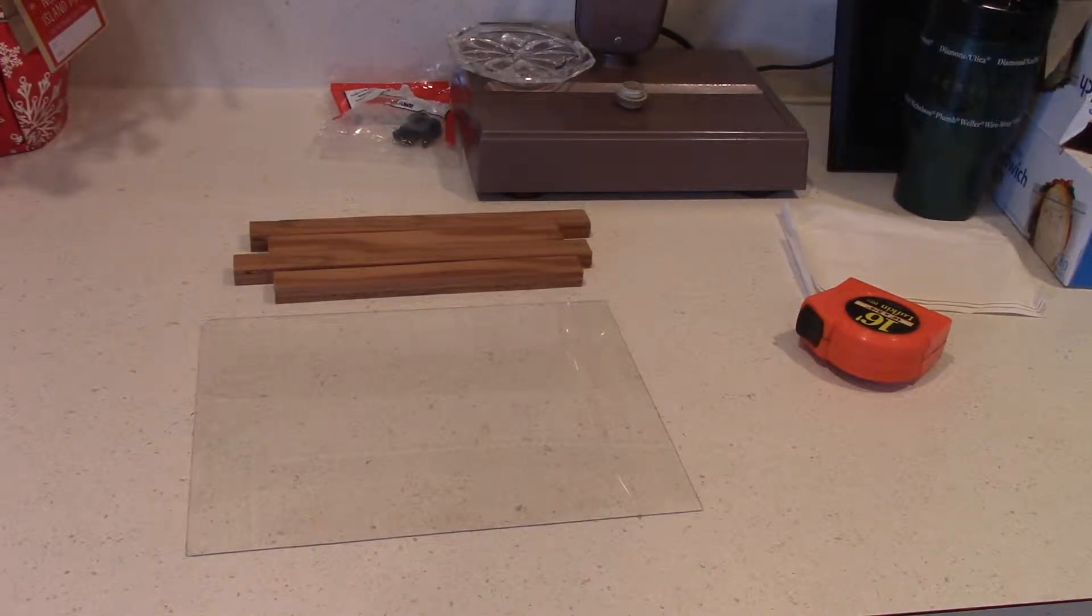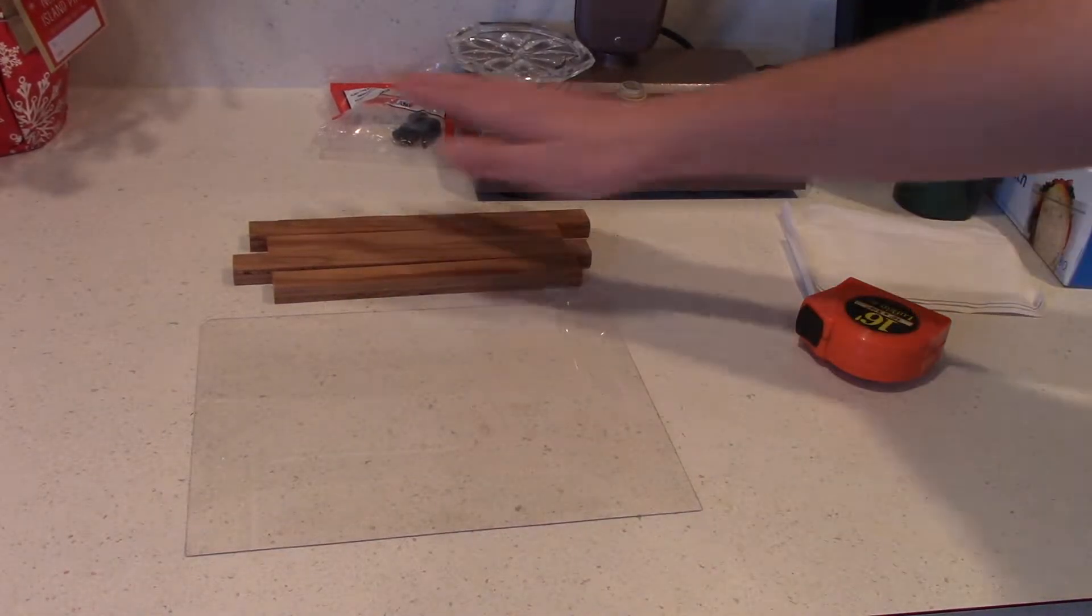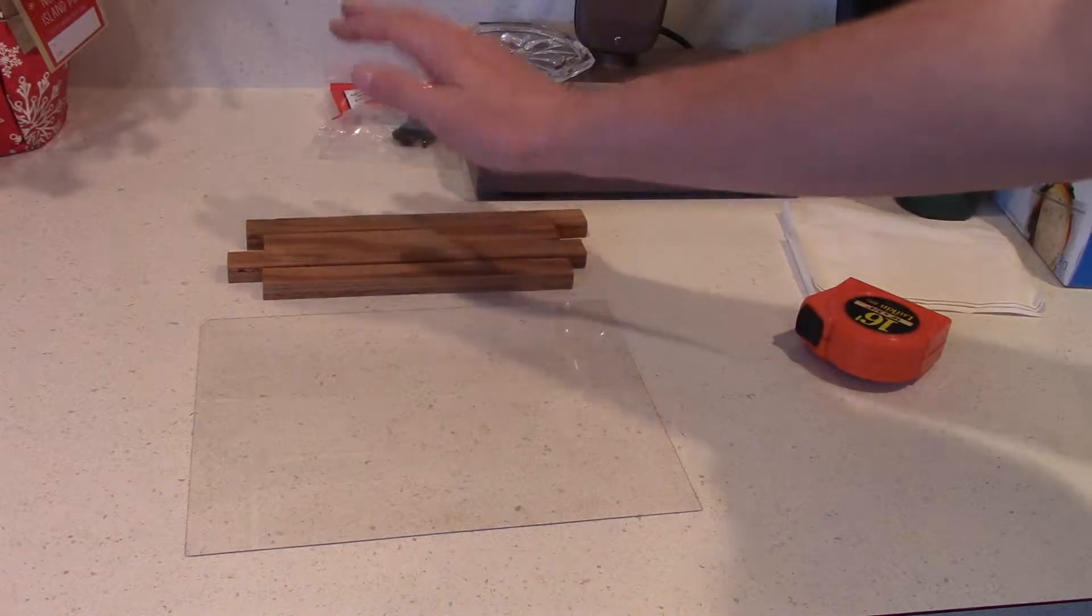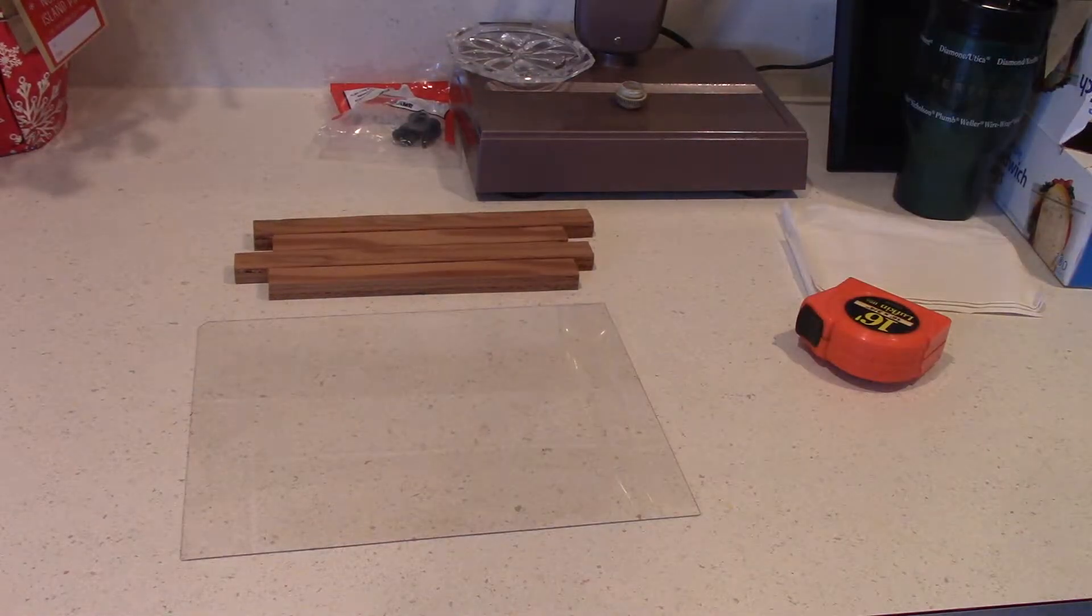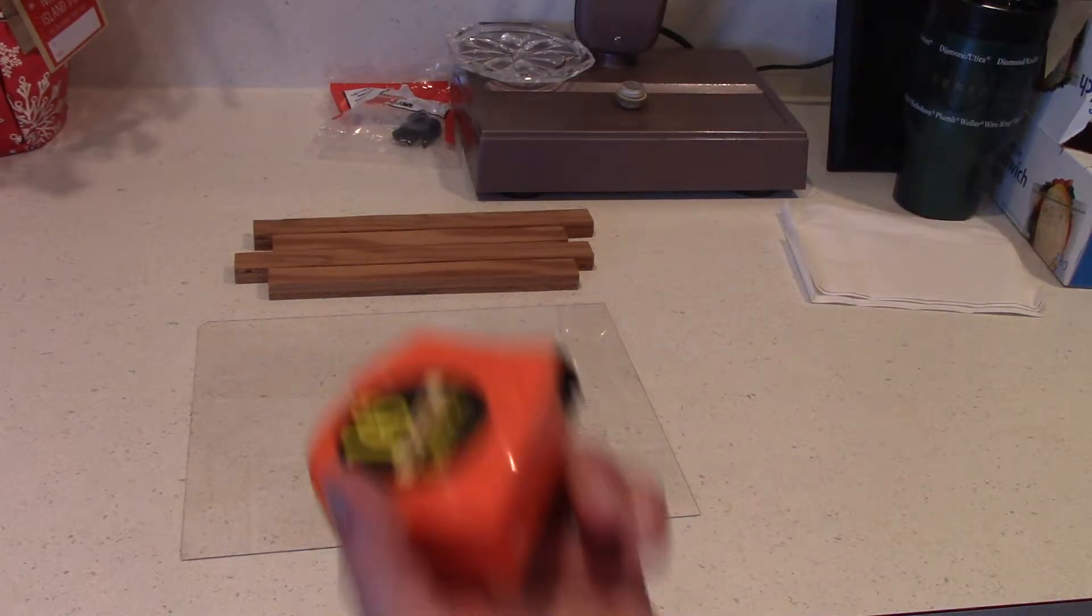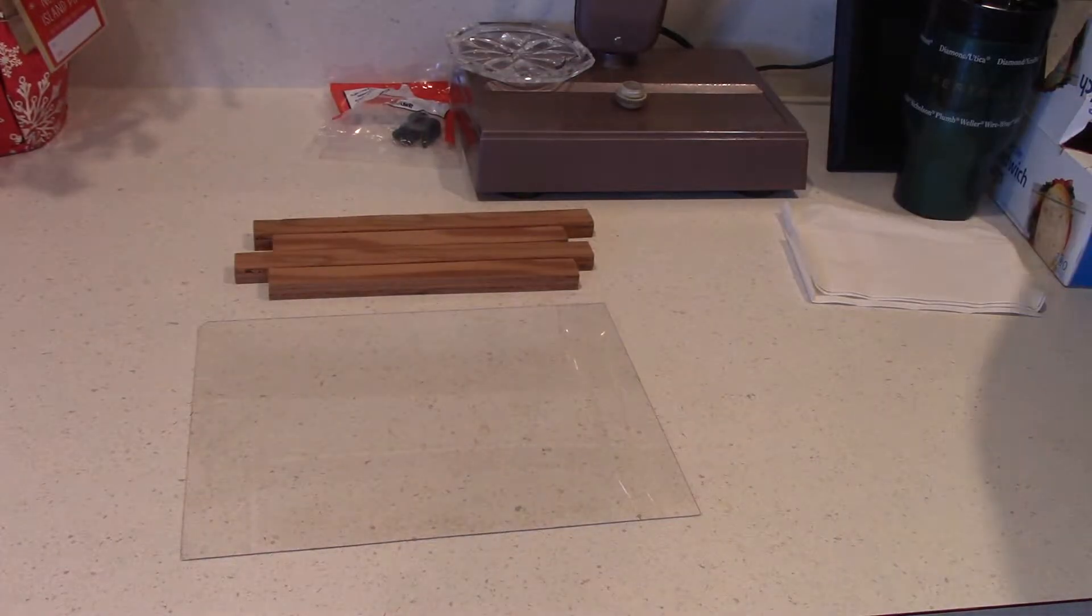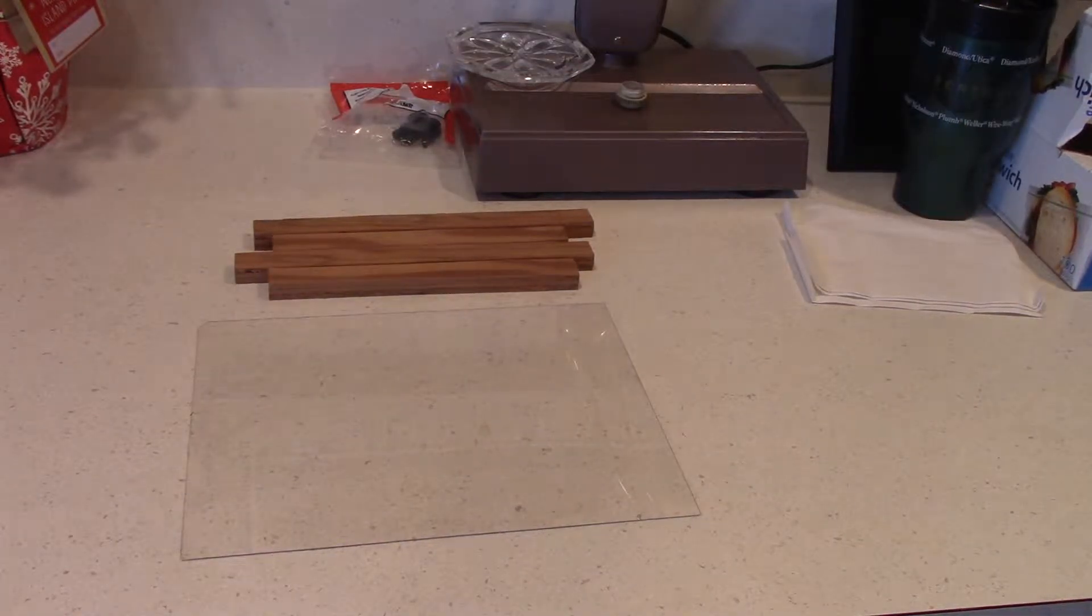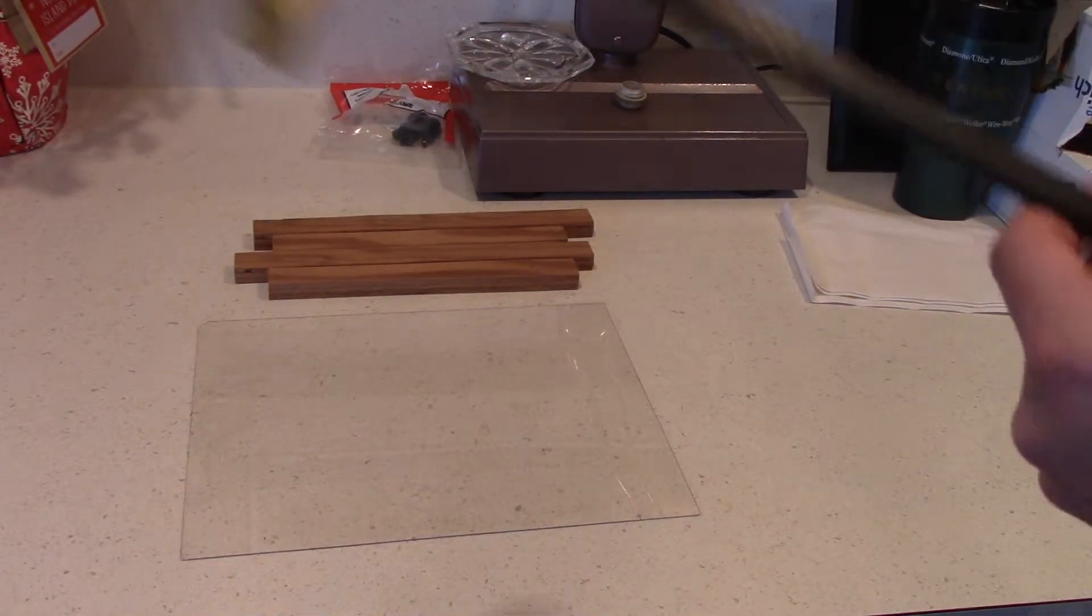So I have cut all the wood pieces and here is what you are going to need. You are obviously going to need the frame pieces and the piece of plexiglass, the tape measure to cut your pieces, and you are going to need some clamps in order to glue.